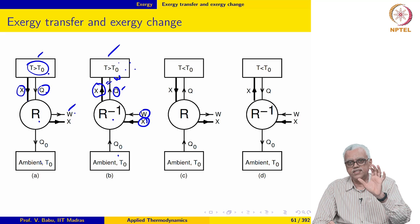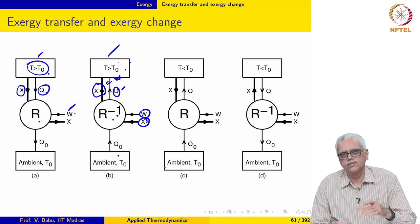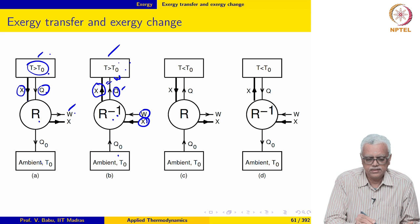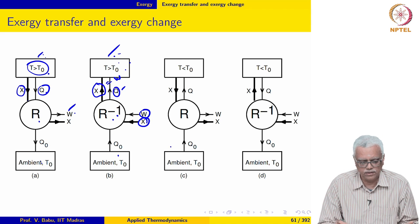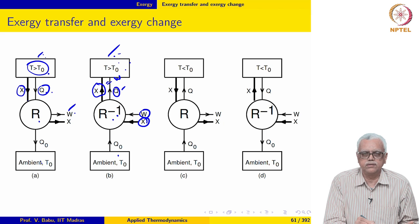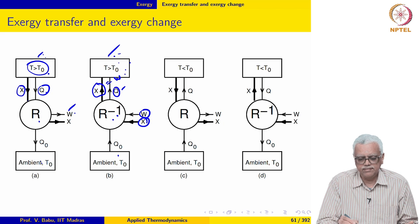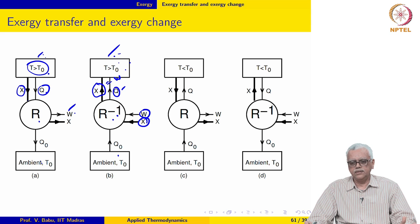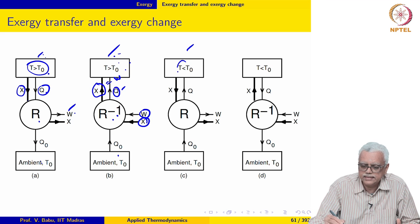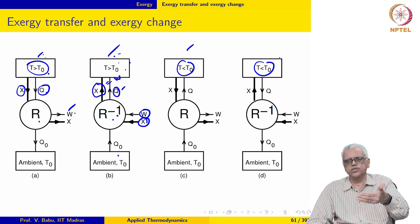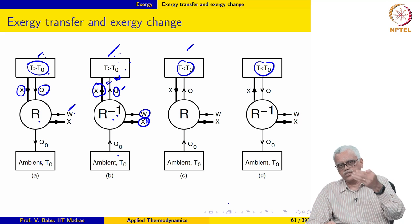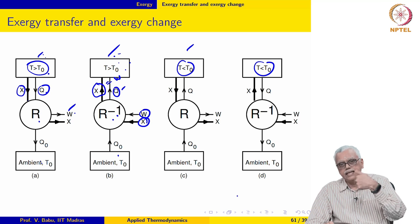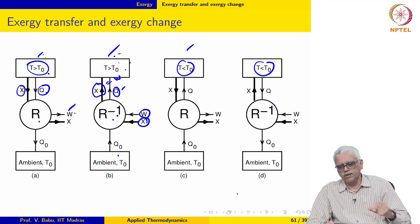To summarize: for a reservoir or system at temperature greater than T0, when heat is supplied by the reservoir its exergy decreases by X = W_reversible; when heat is rejected to the reservoir its exergy increases by X. In the next lecture we will discuss what happens when the system is at a temperature less than T0 — how exergy changes when heat is rejected to it or when it supplies heat.